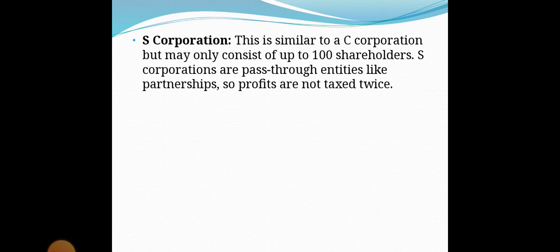The second is the S corporation, which is similar to the C corporation but may only consist of up to 100 shareholders. S corporations are pass-through entities like partnerships, so profits are not taxed twice. هذا مشابه للـ C corporation، قد يتكون فقط مما يصل إلى 100 مساهم. الـ S corporations هي كيانات عابرة مثل الشراكات — لا يتم فرض ضرائب على الأرباح مرتين.